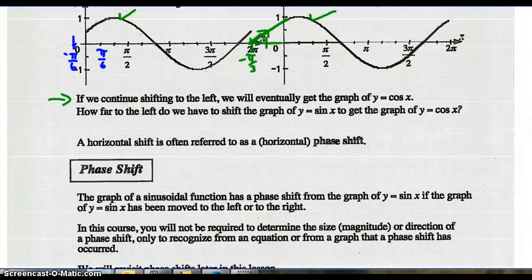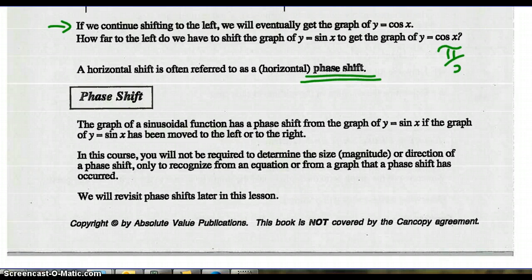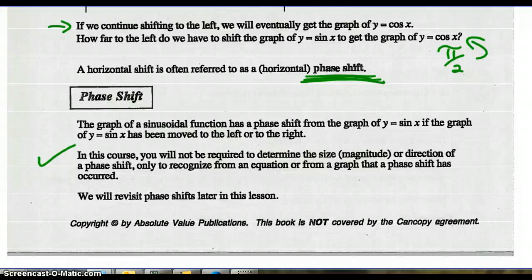Horizontal shift is often referred to as a phase shift. The question is: how far to the left do we have to shift sine? We have to shift it pi over 2 to the left before we get cosine x. So we call horizontal shifts phase shifts. Note: in this course, we're not required to determine the size or direction of the phase shift, only to recognize that a phase shift is occurring. We'll talk more about this later in this lesson.